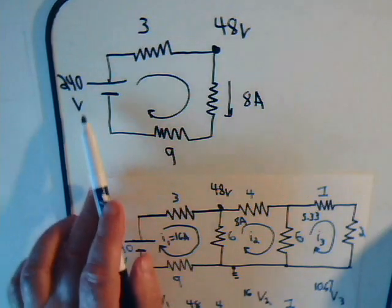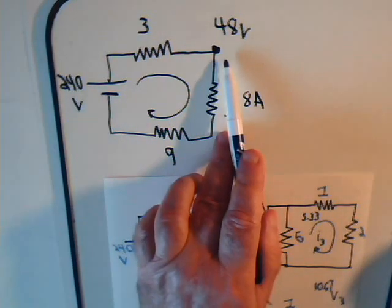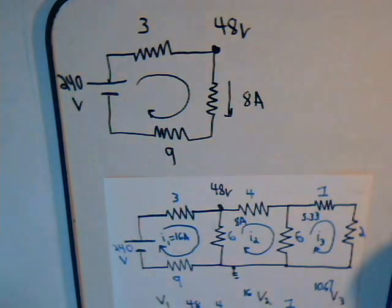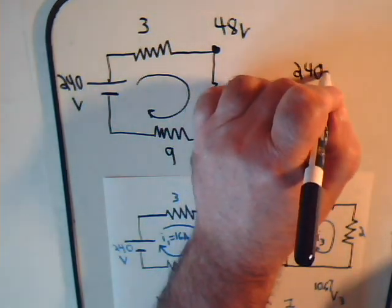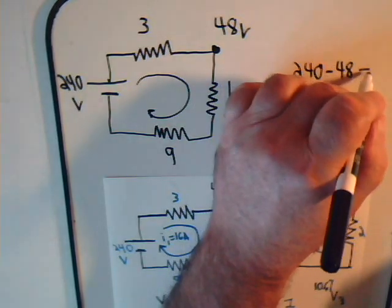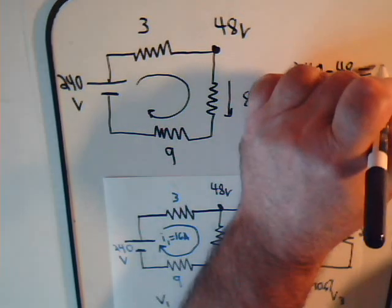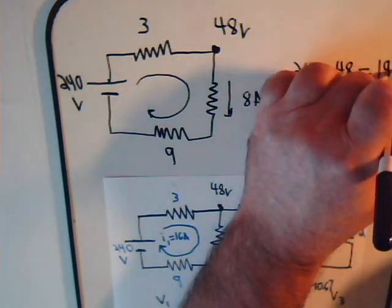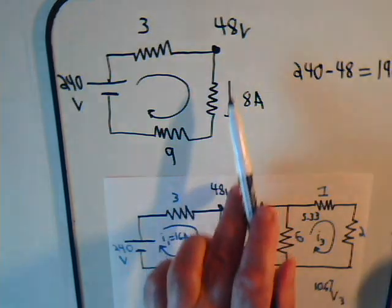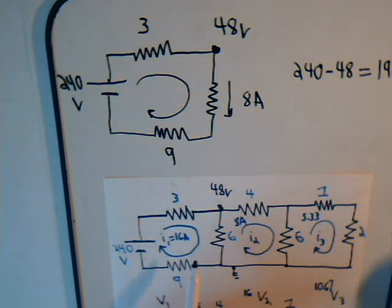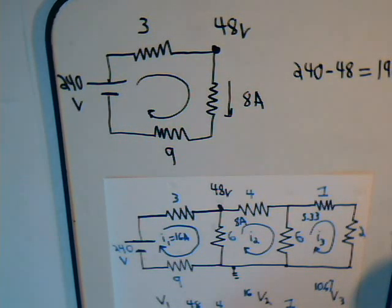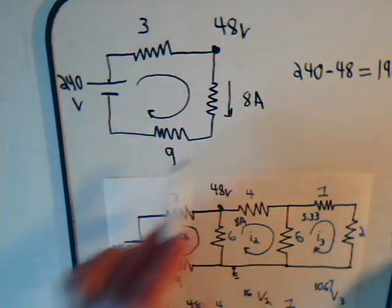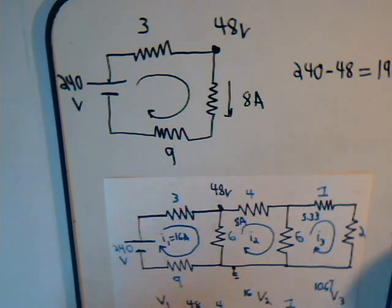So, here we have 240 volts minus 48 volts, so we have 240 minus 48, that's 192 volts. So this is at a voltage drop of 48 volts. That means then these two together have to give us a voltage drop of 192 volts, so that when we go all the way around, we get the 240 value.